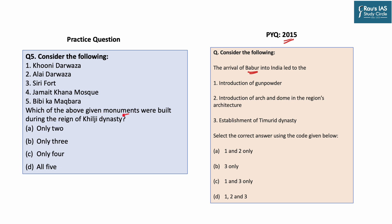The question asks which of the given monuments were built during the reign of the Khilji dynasty, whose reign was between 1290 to 1320 AD. First, Khuni Darwaza — this is incorrect, as it was built by Sher Shah Suri and is one of the 13 surviving gates in Delhi. Second, Alai Darwaza — this is correct; it was built by Alauddin Khilji and is part of the Qutub complex. Third, Sirifort — also built during the reign of Alauddin Khilji to defend against Mongol attacks. Fourth, Jamaat-e-Khana Mosque — this statement is also correct; however, it was not built by Alauddin Khilji but by Khizr Khan, his successor and son.